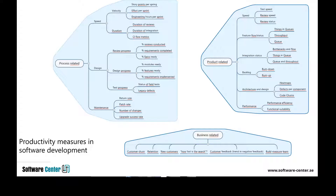Looking at the productivity landscape in software development today, I see three areas. The first is process-related measures of productivity — the most common way of thinking about it — such as how many requirements do we implement per week, per hour, or per developer, or how many story points per sprint. These are common, but they are very loosely related to actual output. Saying we implemented 20 requirements depends as much on how we write the requirements as on what we actually implemented. Process-related measures are easy to manipulate.